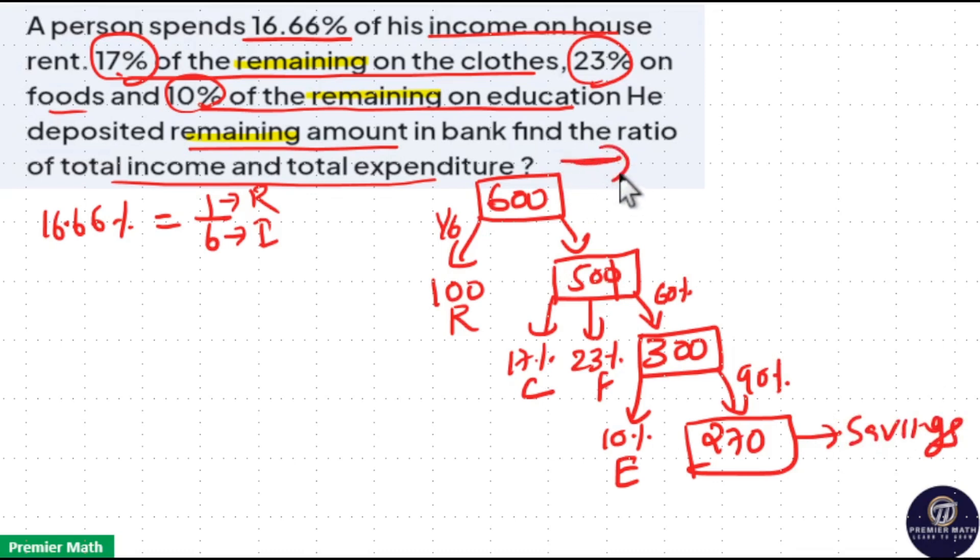Now we need the ratio of total income 600 and total expenditure. Income minus savings is expenditure, which is 600 minus 270, which is 330 rupees. So 600 is to 330 means 3 goes 20 times in 60, 3 goes 11 times in 33. So 20 is to 11 is the ratio.